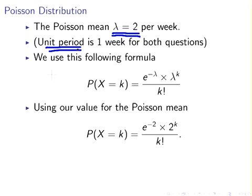We're going to use this formula: the probability equals e to the minus lambda (that's the Poisson mean, e is the exponential number) times lambda to the power of k all over k factorial. Now k is the number we're actually particularly interested in. Subbing in our value for lambda is 2, so I'm going to change it to e to the minus 2 times 2 to the power of k all over k factorial.